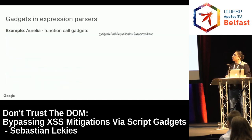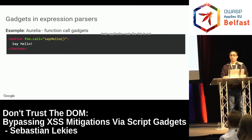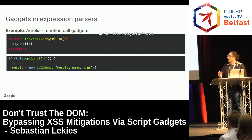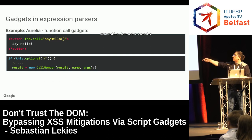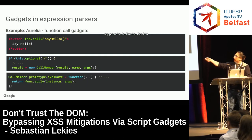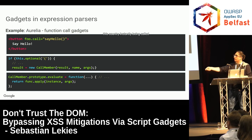Aurelia also has a function call gadget. You can call a sayHello function that is part of legitimate Aurelia application code. When Aurelia parses this, it encounters the open parenthesis and creates a CallMember object, extracting the function name and potential arguments. When the expression is evaluated — usually when the template is rendered — the func is a reference to the sayHello function. This is a piece of legitimate JavaScript code part of the application using Aurelia framework, and this function is simply called via Function.apply, which calls a function bound to a given object with certain arguments.